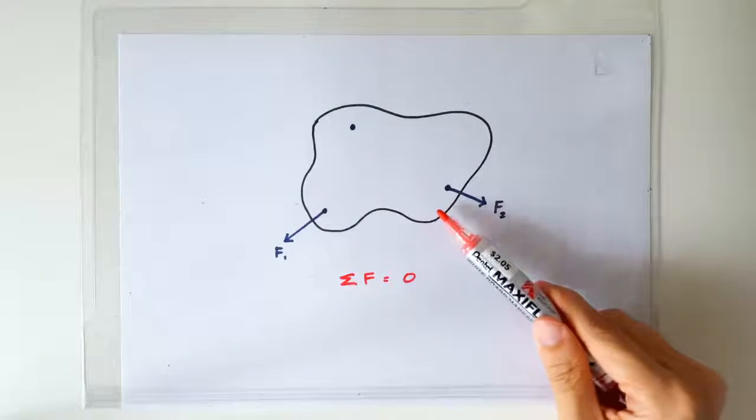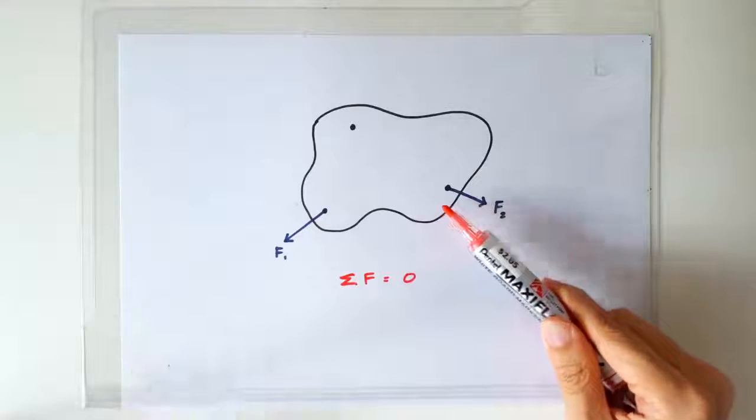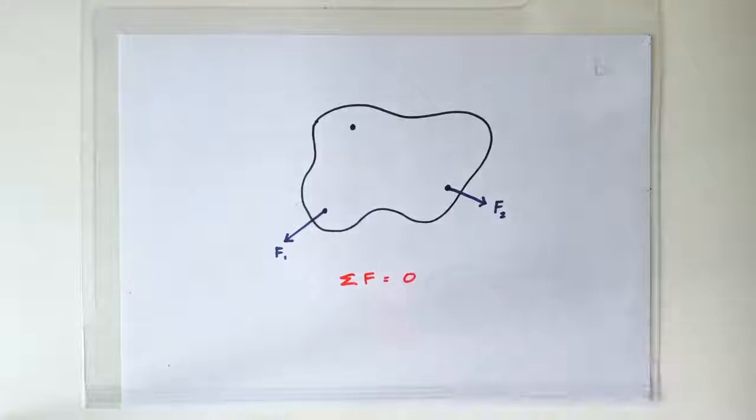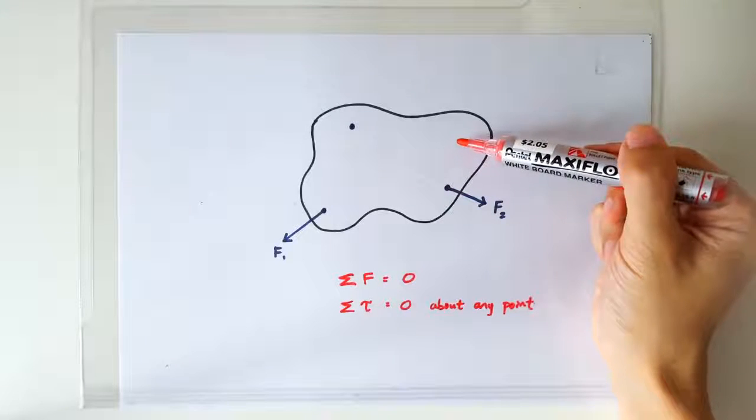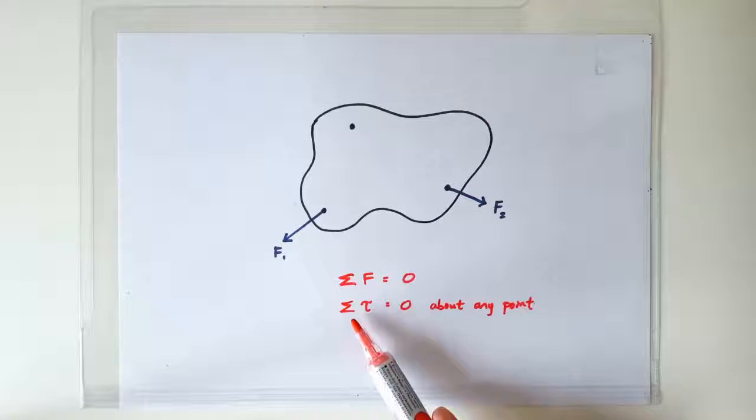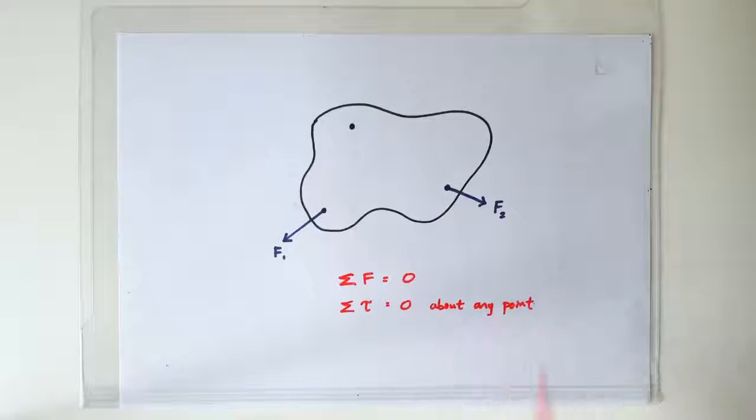Since the object is at translational equilibrium, net force should be zero. The object is also in rotational equilibrium, that means the net torque should also be zero about any point.